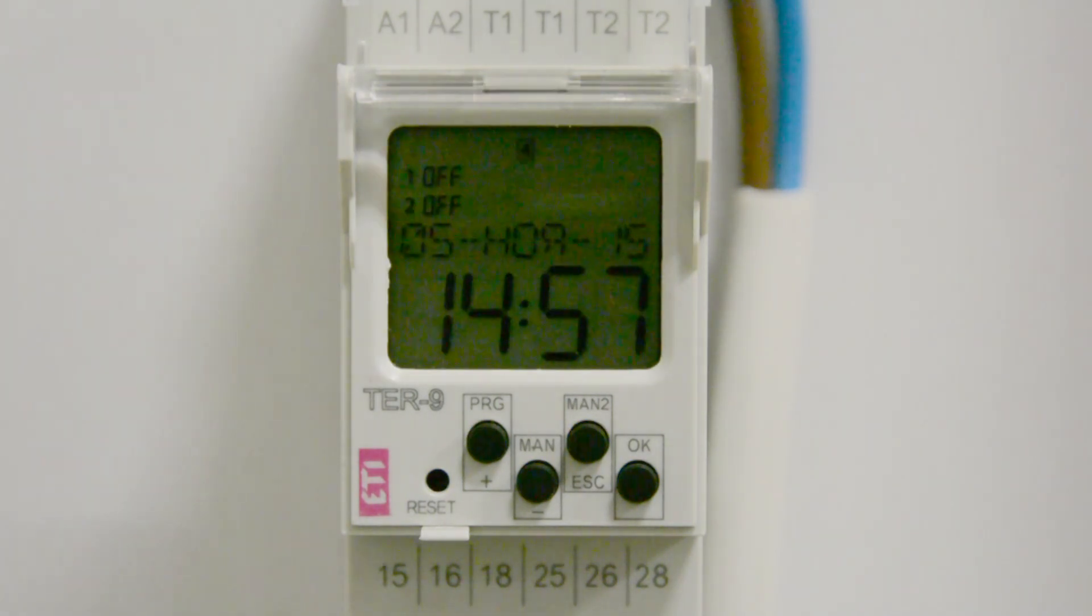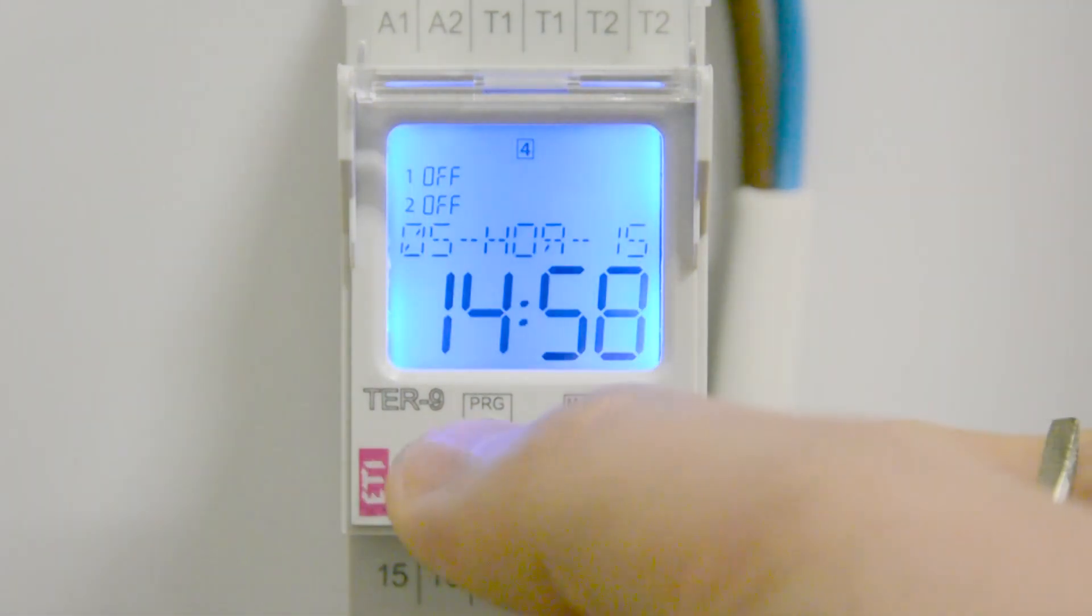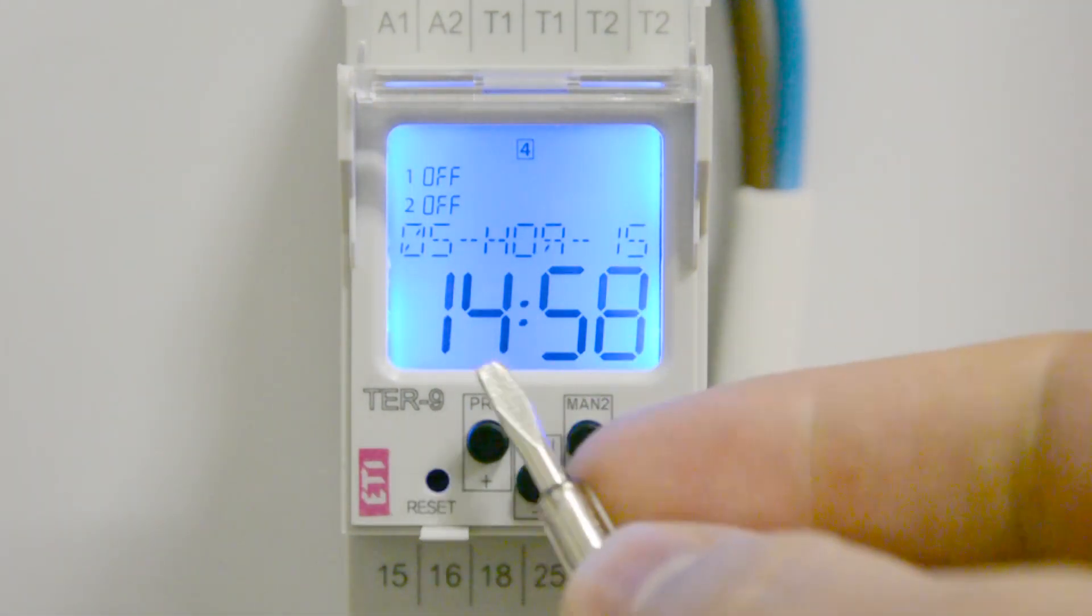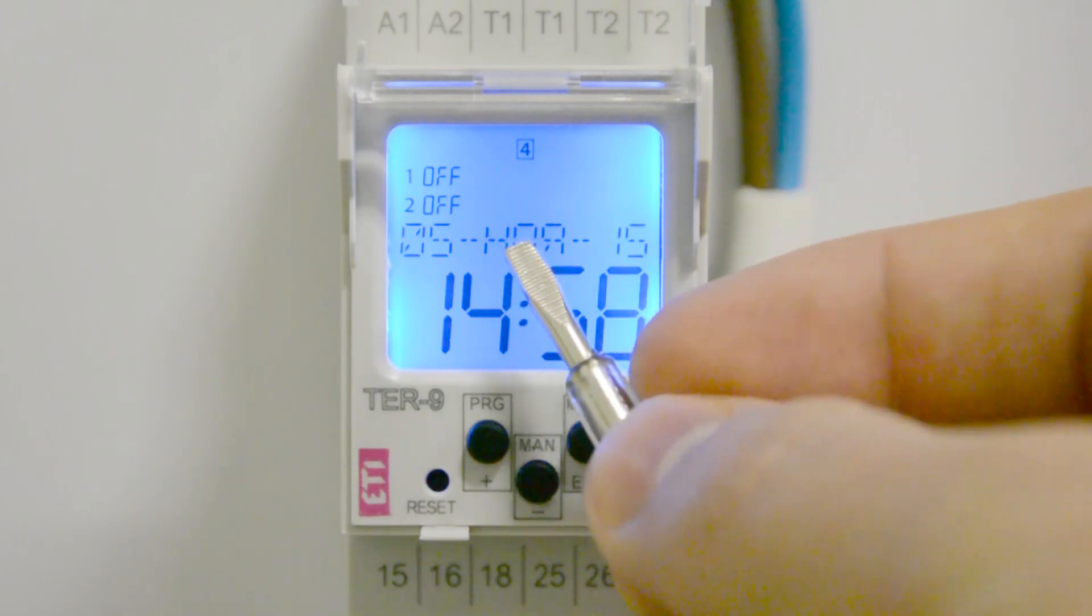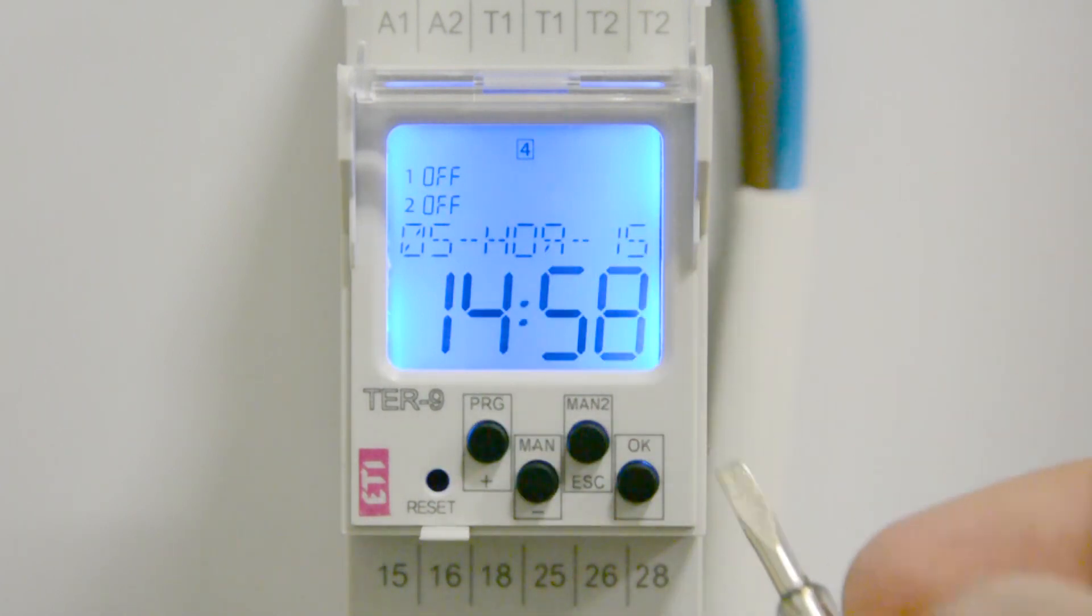This relay is mounted on a DIN rail, occupying two modules. The relay has an LCD display which in normal operation mode displays the current time, day of the week and date, the state of the contact group, and the selected switching mode.